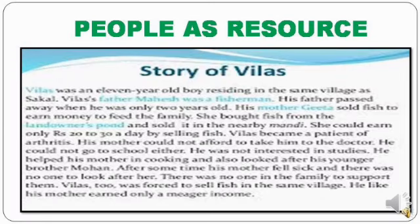Villas was an 11-year-old boy residing in the same village. His father Mahesh was a fisherman who passed away when Villas was only two years old. His mother Geeta sold fish to earn money to feed the family. She bought fish from the landowner's pond and sold it in the nearby mandi, earning only rupees 20 to 30 a day.